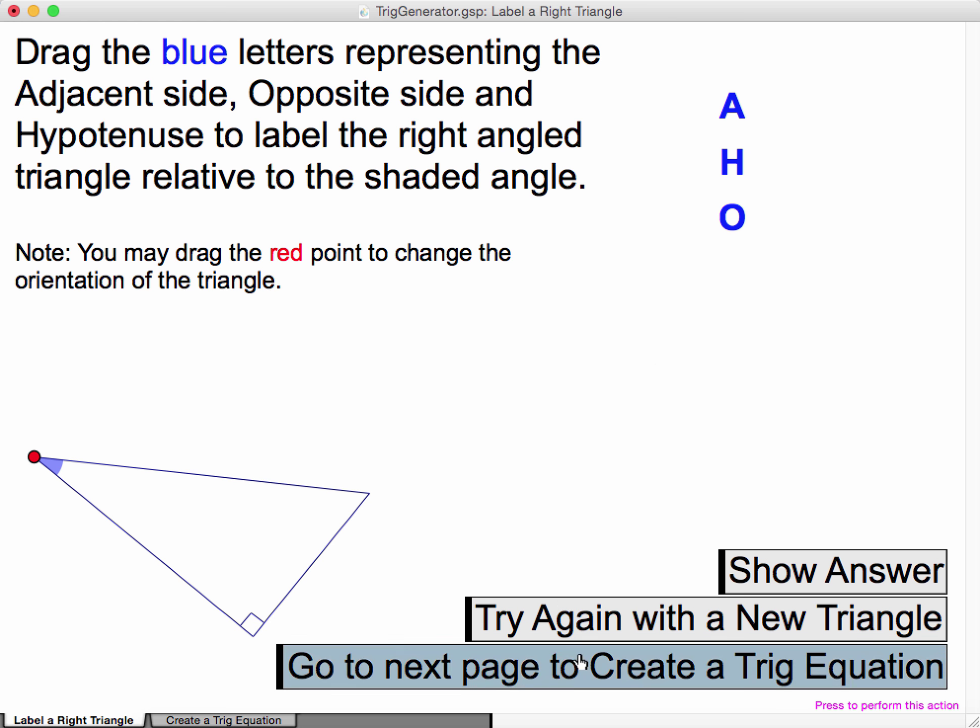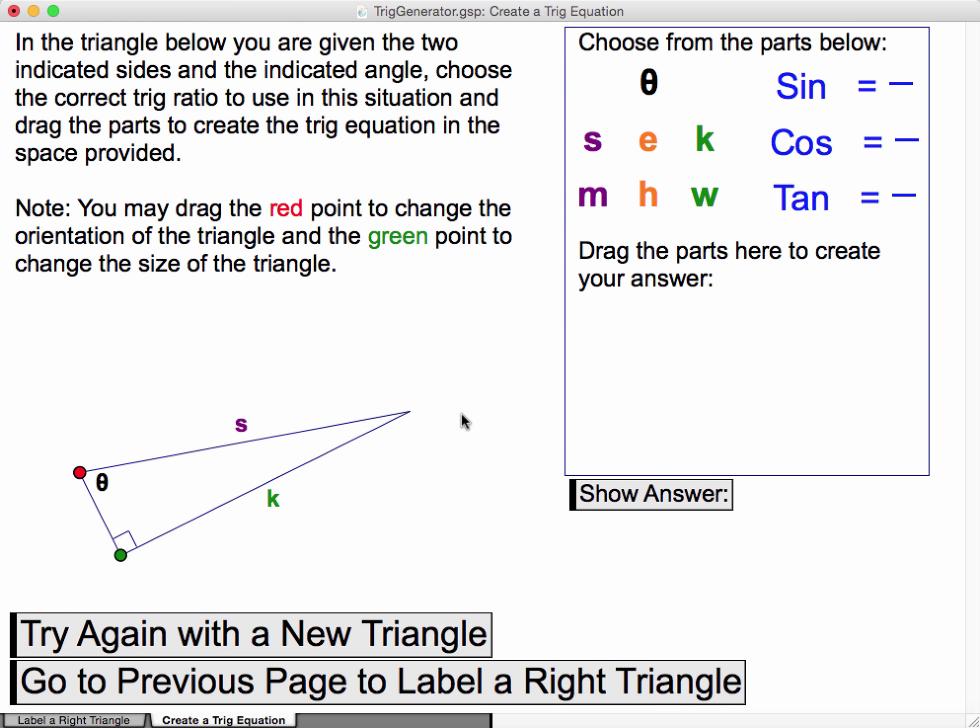The second part of the sketch is in actually building a trig ratio equation given a certain triangle. So again, here's a triangle. It's got two indicated sides and one indicated angle.